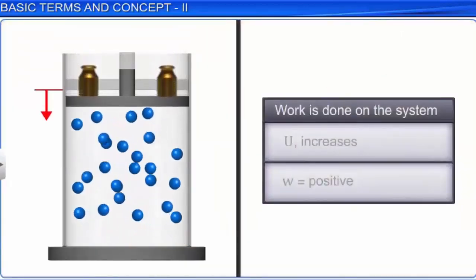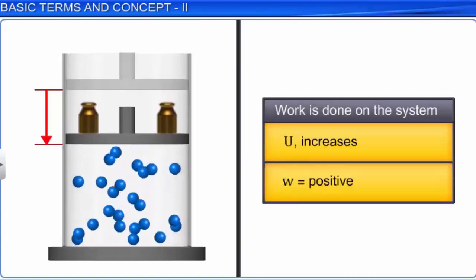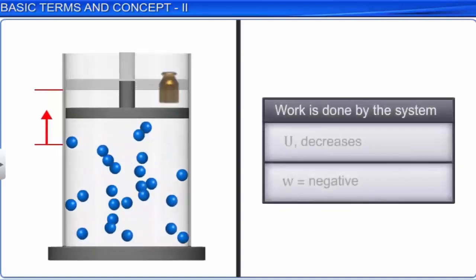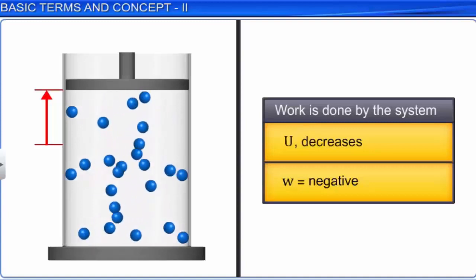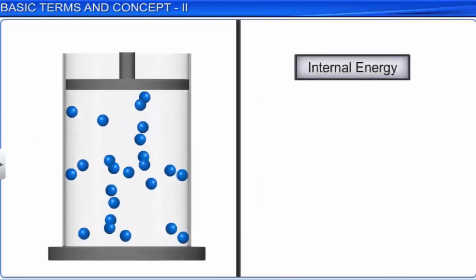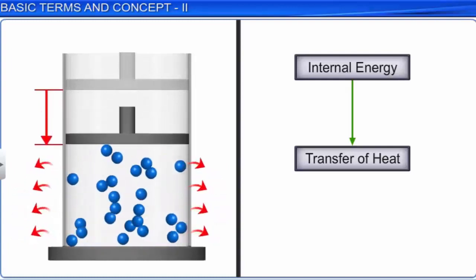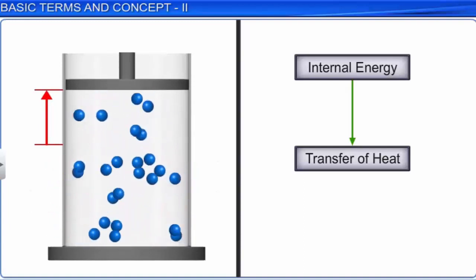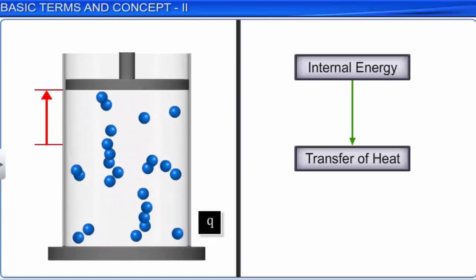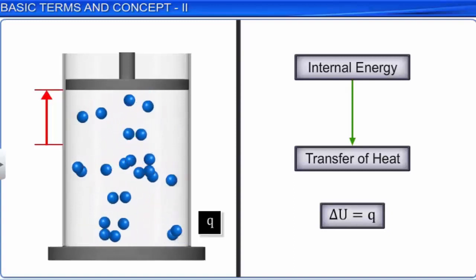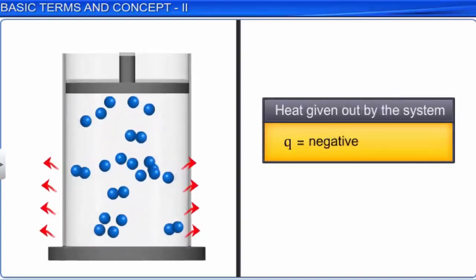If work is done on the system, then U increases and W is considered as positive. On the other hand, if work is done by the system, then U decreases and W is considered as negative. A change in internal energy can also be brought about by the transfer of heat. Heat transfer takes place from the system to the surroundings or vice versa. The exchange of energy due to temperature difference is called heat Q. Therefore, delta U is equal to Q. Q is positive if heat transfers from the surroundings to the system, and negative if heat transfers from the system to the surroundings.